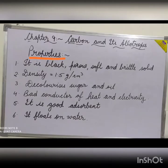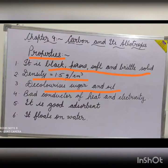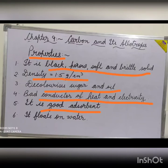Properties of wood charcoal: it is black, porous, soft and brittle solid. Its density is 1.5 grams per centimetre cube. It decolourises sugar and oil. It is a bad conductor of heat and electricity. It is a good adsorbent — meaning it has the property of holding solids, liquids and gases on its surface and releasing them back on heating. The wood charcoal can absorb solids, liquids and gases.